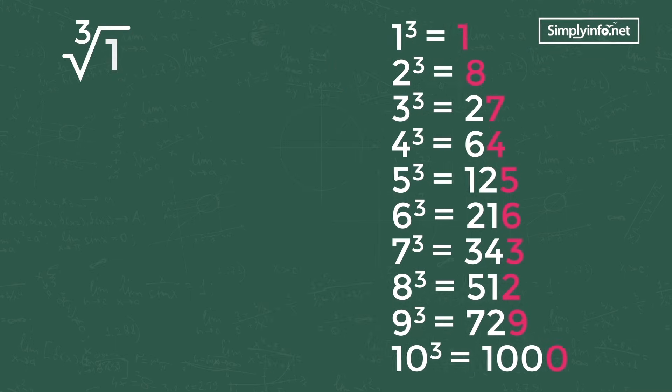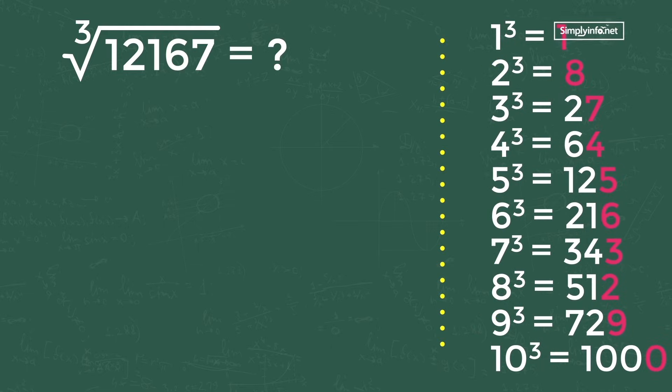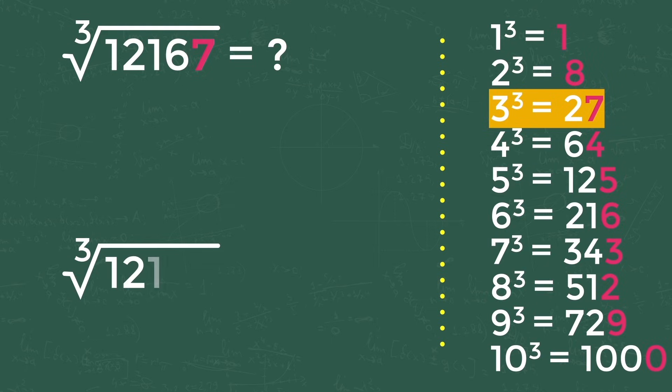Cube root of 12167 is how much? If you see any digit number, take the last digit and match it with cube root values from the cube table mentioned earlier. Here the last digit is 7. By matching it with 1 to 10 cube values, we got 3 cube as a matching number, as last digit of 3 cube is 7. So the last digit of the answer to cube root of 12167 is 3.